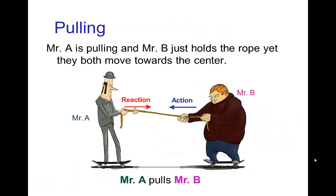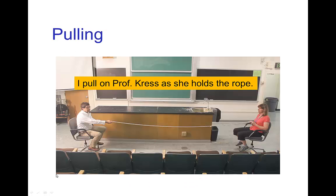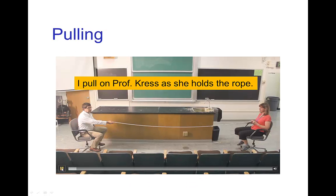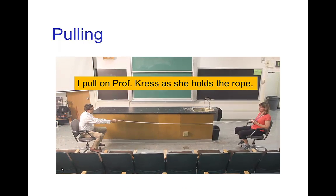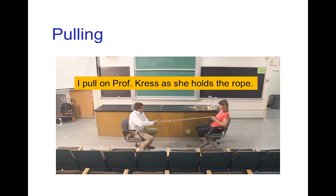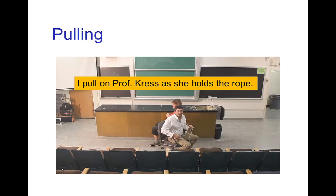Let's look at a basic example where two characters are interacting, with one character pulling the other towards him. Let's say Mr. A is pulling Mr. B towards him, and Mr. B is just holding on to the rope. Here's a little video demonstrating that — I am pulling Dr. Kress and she just holds the rope, and you see that we come together roughly in the middle.